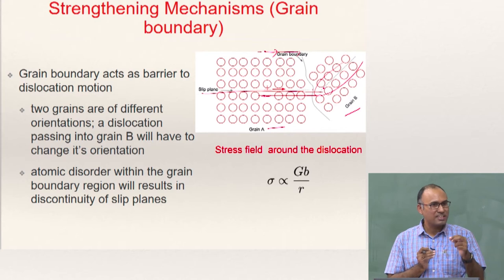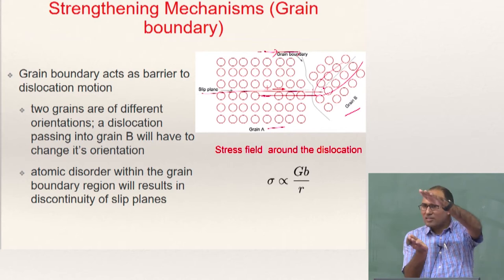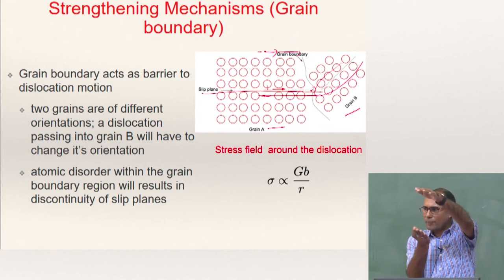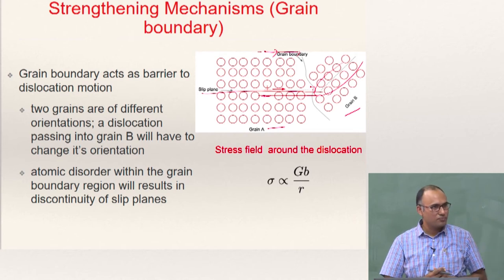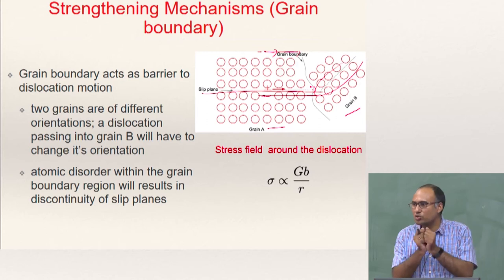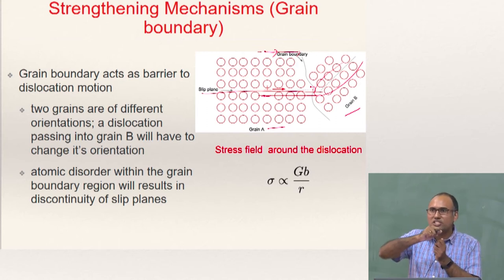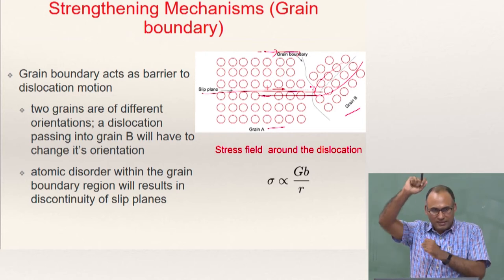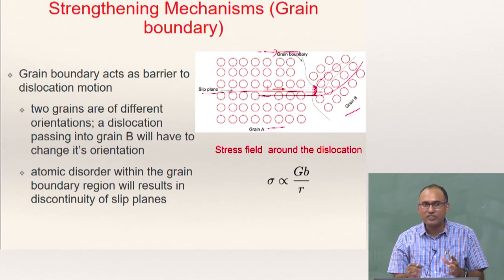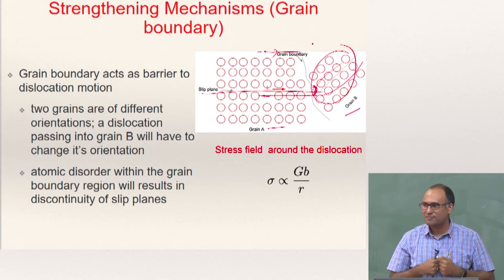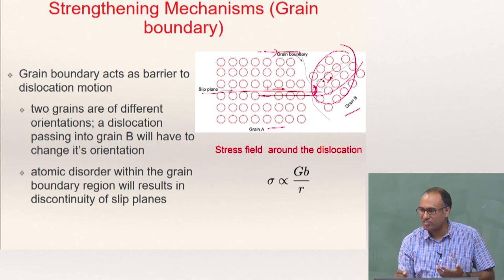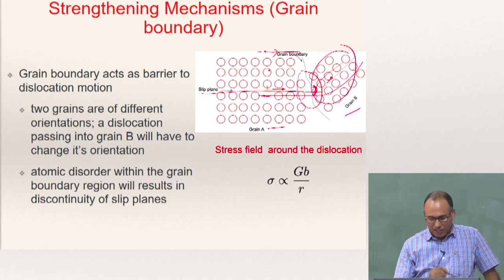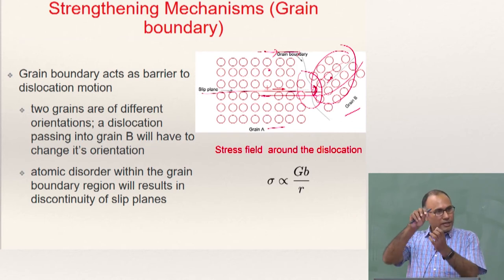Then what happens? The dislocation gets stuck near the grain boundary. You are applying stress but the dislocation is not able to move across the grain boundary, and as a result you will have stress generation. For some time you will have resistance to dislocation motion. You see that on the force-displacement curve the force keeps increasing without much increase in strain. Then, because of the increased stress ahead of the grain boundary, the neighboring grain's slip system gets activated and dislocations in that grain start moving. The atomic disorder within the grain boundary results in discontinuity in the slip planes, and that is what hinders the dislocation motion.